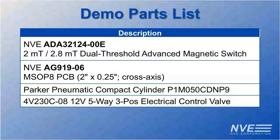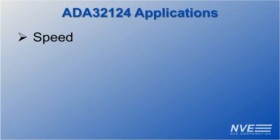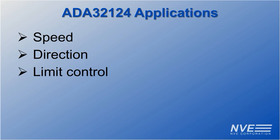These are the parts we used for this demo. We've seen how our new dual threshold magnetic switch sensor can detect speed. It can also be used to determine direction, for precise end of travel control, or to tune ultra-precise switching thresholds.